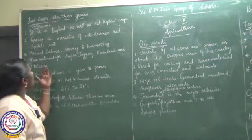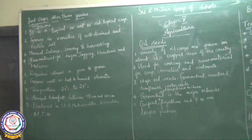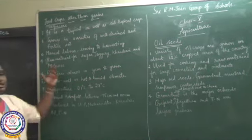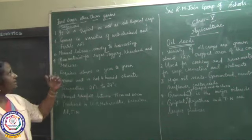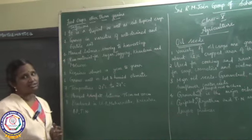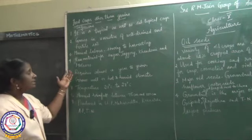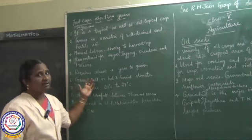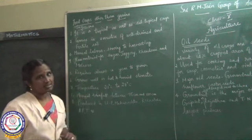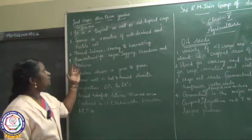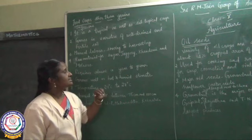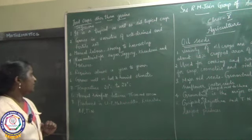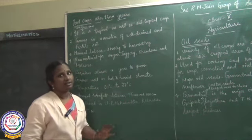Today we are going to study about food crops other than grains. Sugar cane is said to be a tropical as well as a subtropical crop. It grows in varieties of well-drained and fertile soil. It needs almost manual labor from sowing to harvesting. It is a raw material for sugar, jaggery, kansari, and molasses. It requires almost a year to grow.